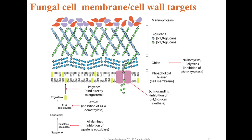The next class of drugs target either the cell membrane or the cell wall — structures unique to fungi and ideal drug targets. The cell wall and cell membrane are not only different from bacterial cells but also from human cells. Notable differences include the nanoproteins on the surface, beta-glucans and chitin in the cell wall. In addition, the cell membrane contains unique component molecules such as ergosterol. Drug targets include these molecules themselves or the enzymes that inhibit their synthesis.